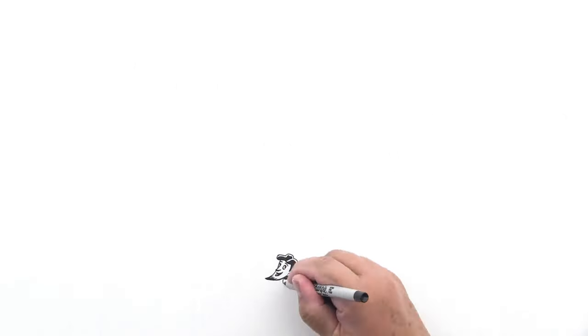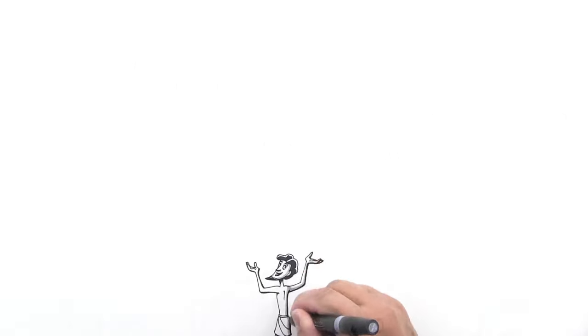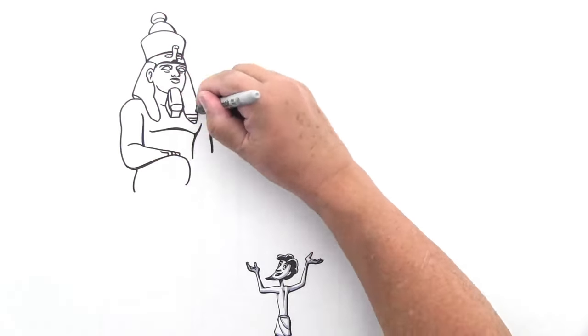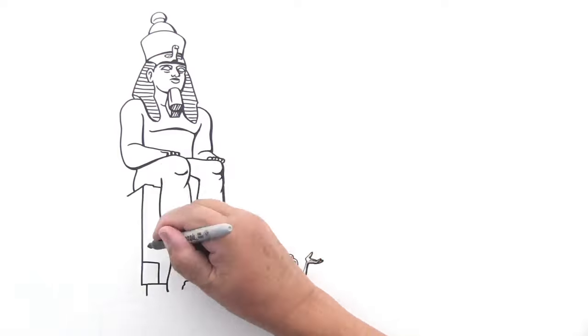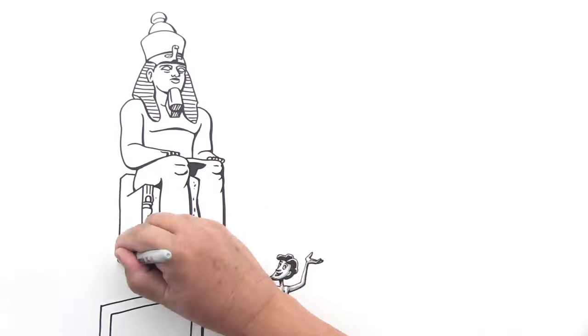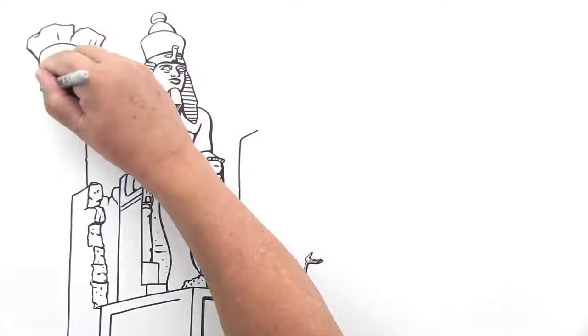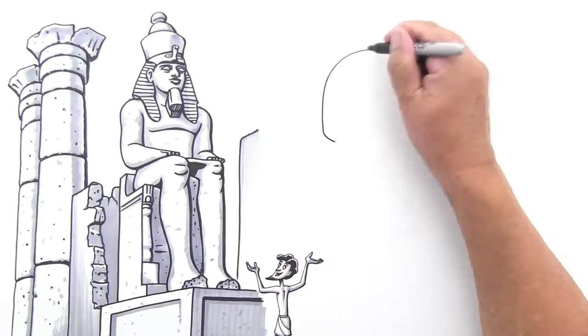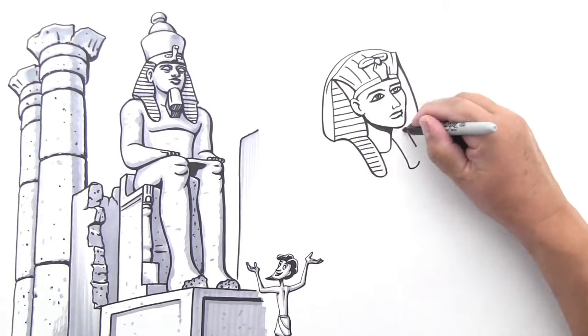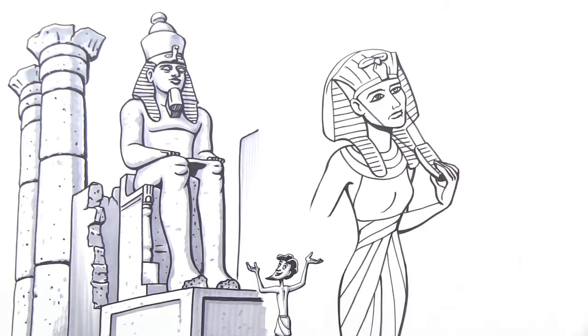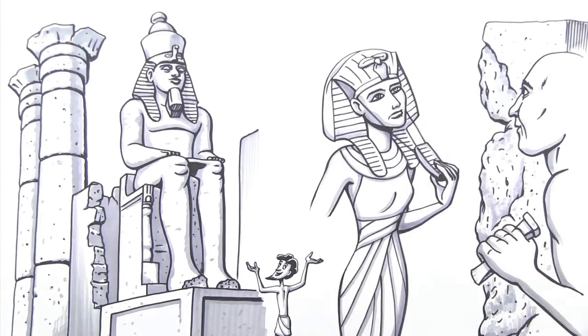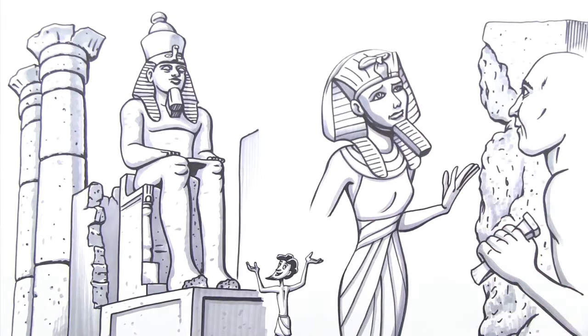Of course, the pharaohs themselves were considered the living gods. Pharaohs were portrayed according to specific rules that emphasized their perfect, unchanging nature. Usually, these representations included some symbols of authority like the royal headdress, the crook, and the flail, and a false beard. Even the female pharaoh Hatshepsut commissioned statues of herself with the false beard to reinforce her position of authority. Oh. Attractive.